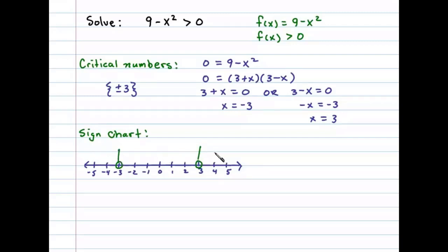We can determine if the function is positive or negative by testing values in each region. Let's begin by choosing some values. I'm going to choose to test x equals 5. In this case, f(5) equals 9 minus 5 squared, which equals 9 minus 25.